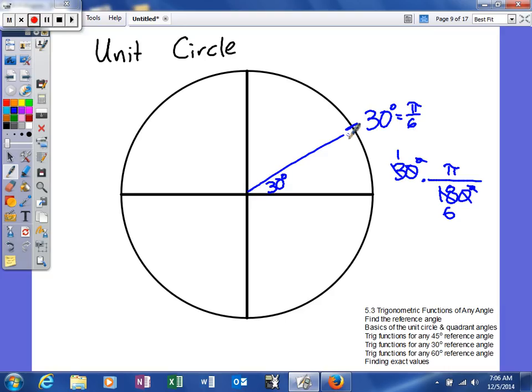Good news is this is one of the angles that you actually need to know. So if you have a 30-60-90 triangle, you should know the sides are 1, 2, square root of 3. We are in the first quadrant, so all the sides will be positive.